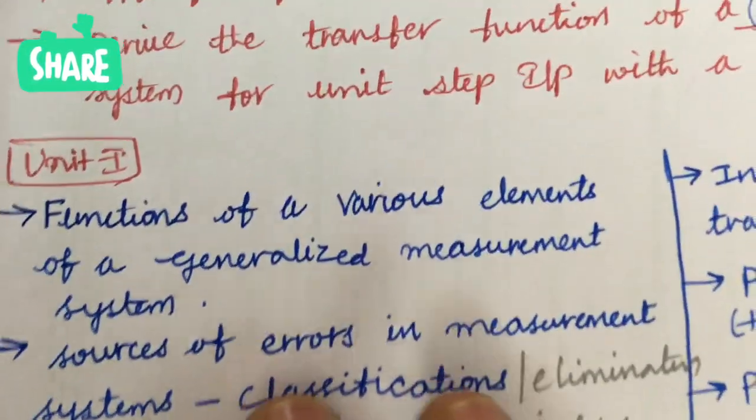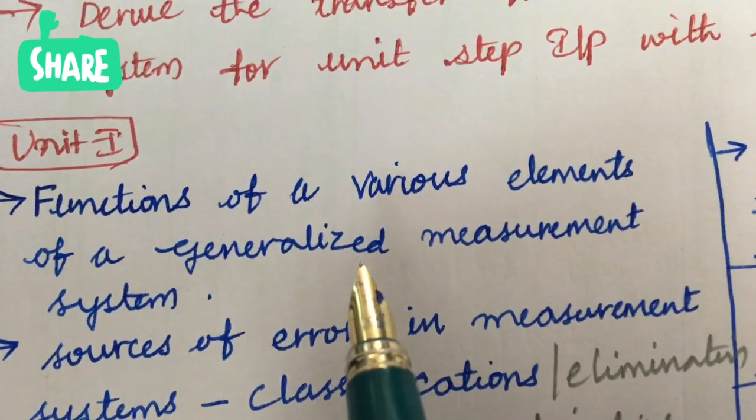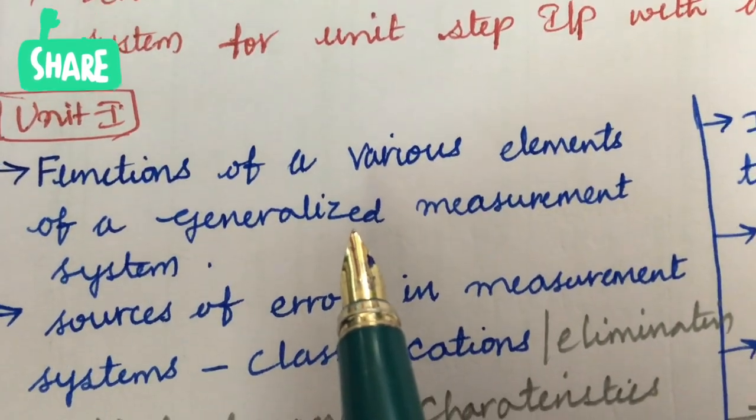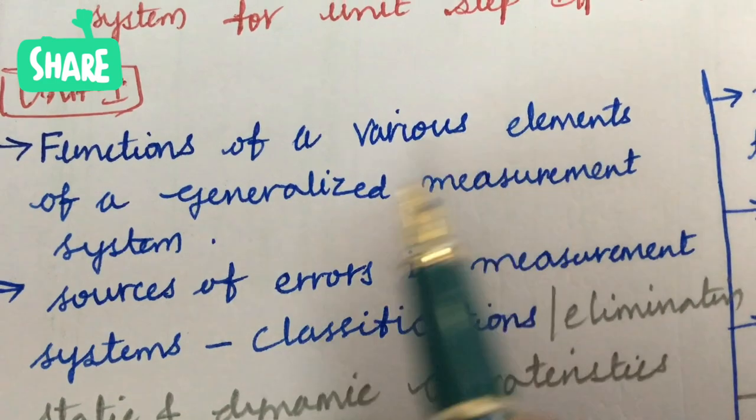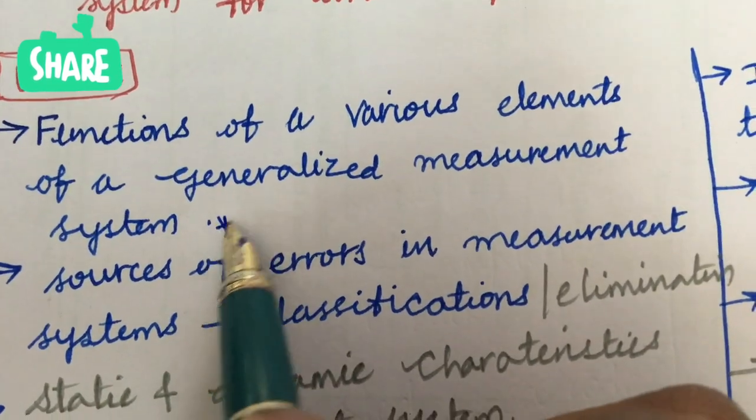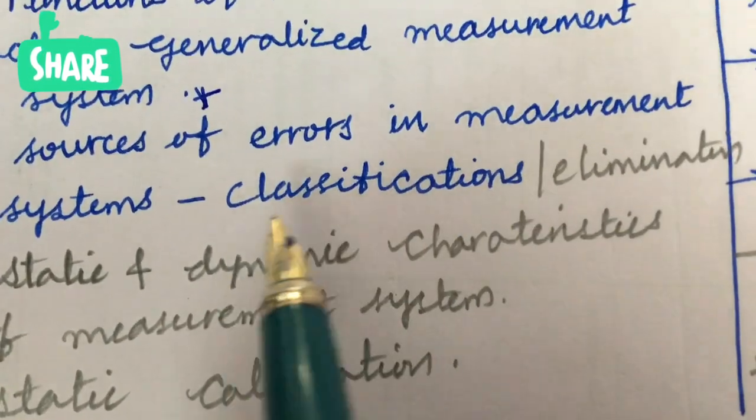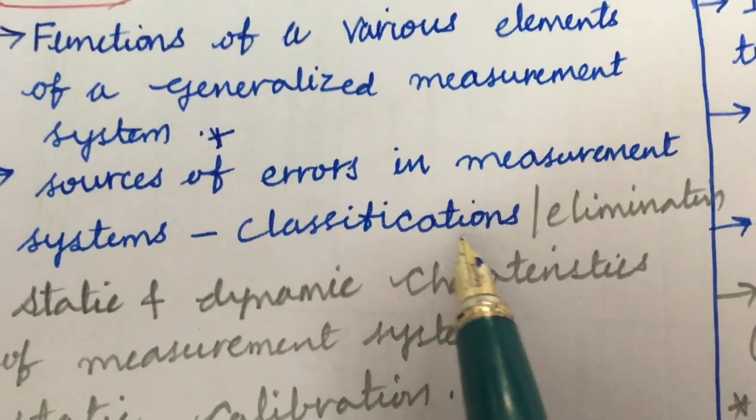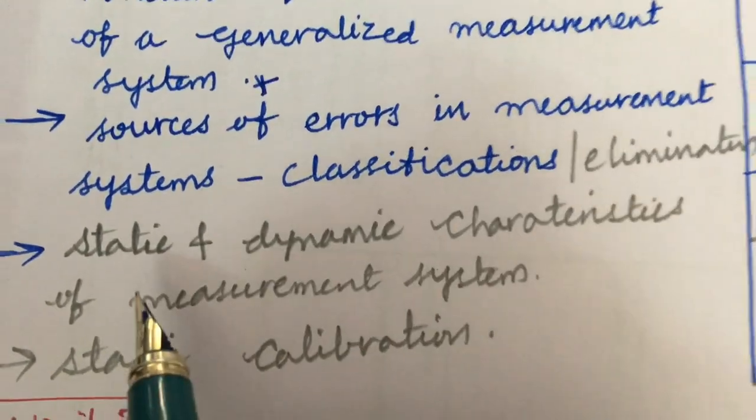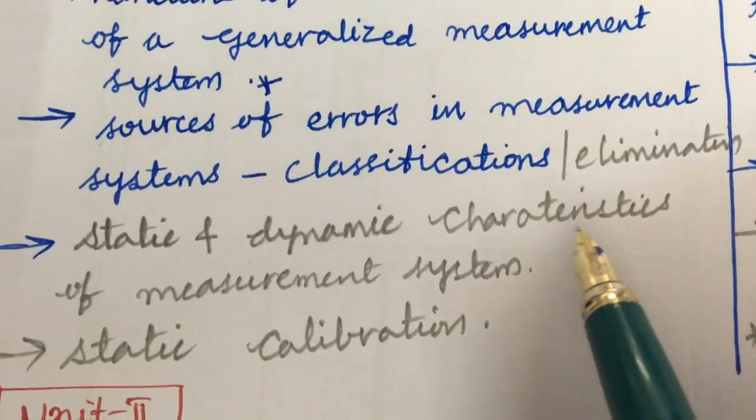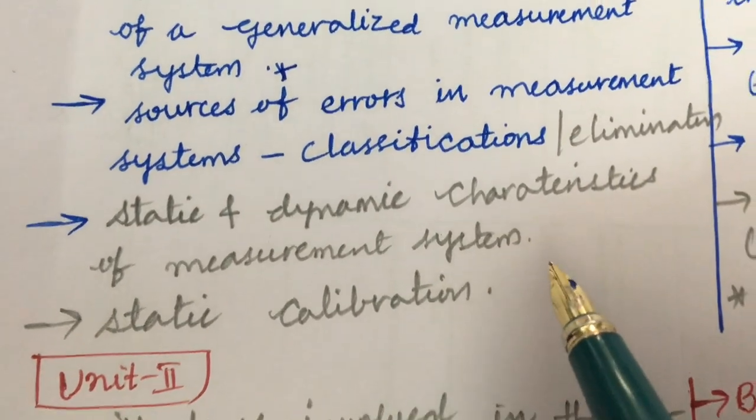And next I have taken into consideration Unit 1. As Unit 1 you will be getting two questions for sure, that is for 30 marks: the functions of various elements of a generalized measurement system and the sources of errors in measurement systems and their classification and elimination of errors, as well as static and dynamic characteristics of a measurement system and the static calibration.